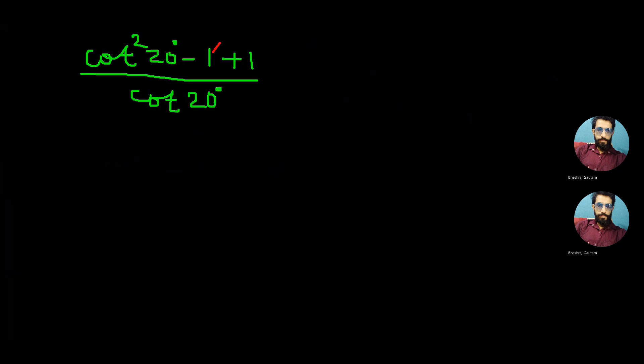Now cancel minus 1 and plus 1 which will be equal to cot²20° divided by cot20°.